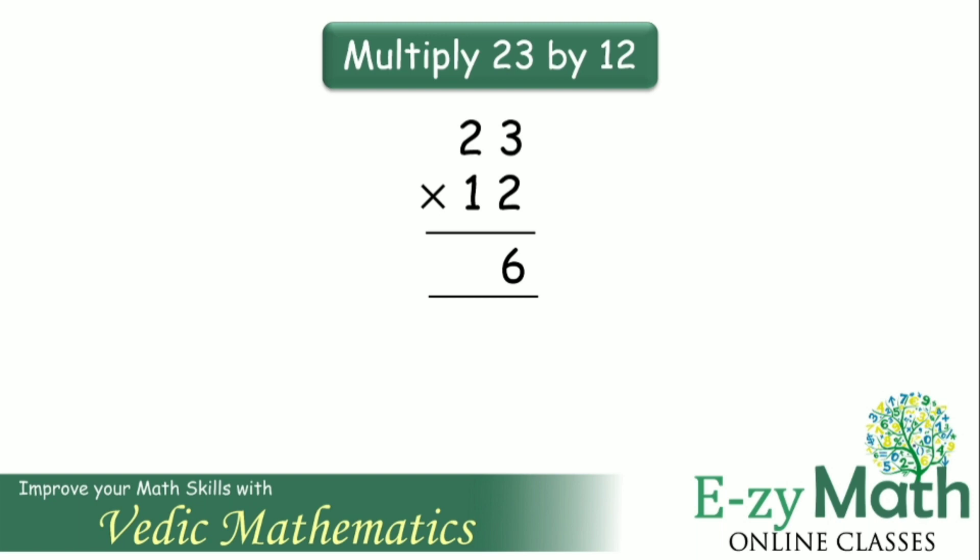To obtain the tens digit, cross multiply 2 into 2 and 3 into 1 then add it together. 2 twos are 4 plus 3 ones are 3. 4 plus 3 gives 7. And to obtain the hundreds digit, multiply 2 into 1. That gives 2.